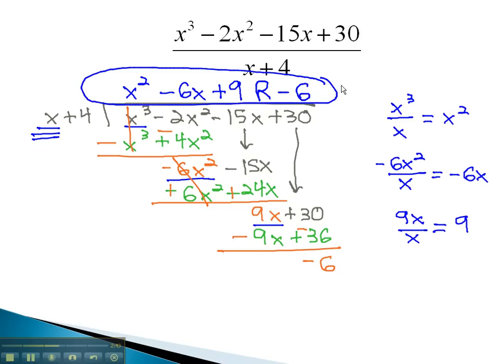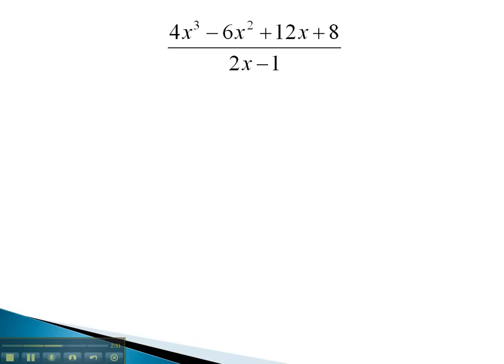Let's take a look at another problem, where we use long division in much the same way. In this problem, we're dividing 2x minus 1 into 4x cubed minus 6x squared plus 12x plus 8.